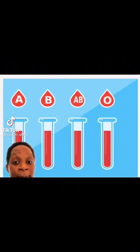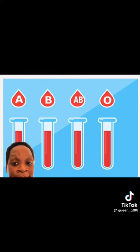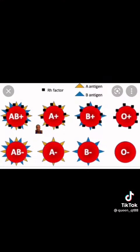Do you know your blood type? Every human on this planet has A, B, AB, or O blood types. And within these types, you either have Rh negative or Rh positive blood. For example, O positive, O negative, A positive, A negative, and so on.